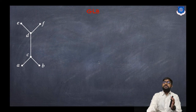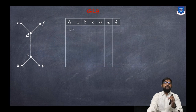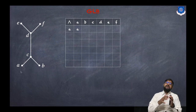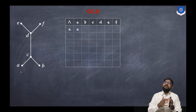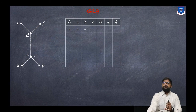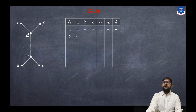Now we will create a GLB (greatest lower bound) table with the same columns and rows a, b, c, d, e, f. GLB(a, a) = a. For GLB(a, b): a and b do not have a lower bound, so they don't have a greatest lower bound — we put a dash. GLB(a, c) = a; GLB(a, d) = a; GLB(a, e) = a; GLB(a, f) = a.